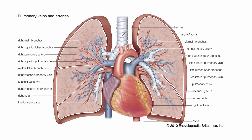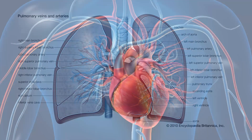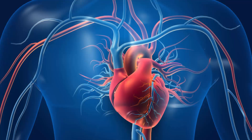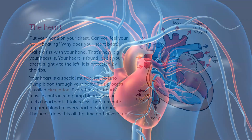Parts of the circulatory system. The circulatory system carries food and oxygen to all parts of your body. It also carries waste substances that your body does not need. The circulatory system has three main parts: the heart, blood vessels, and blood.